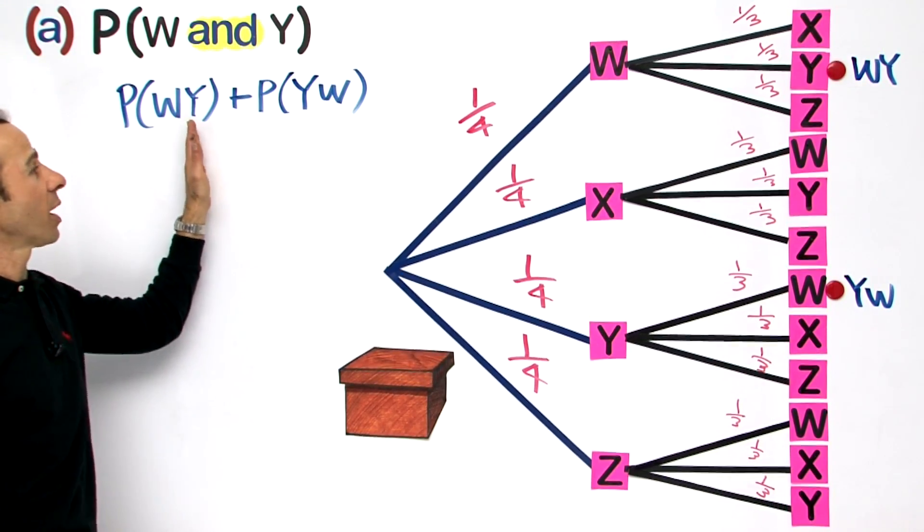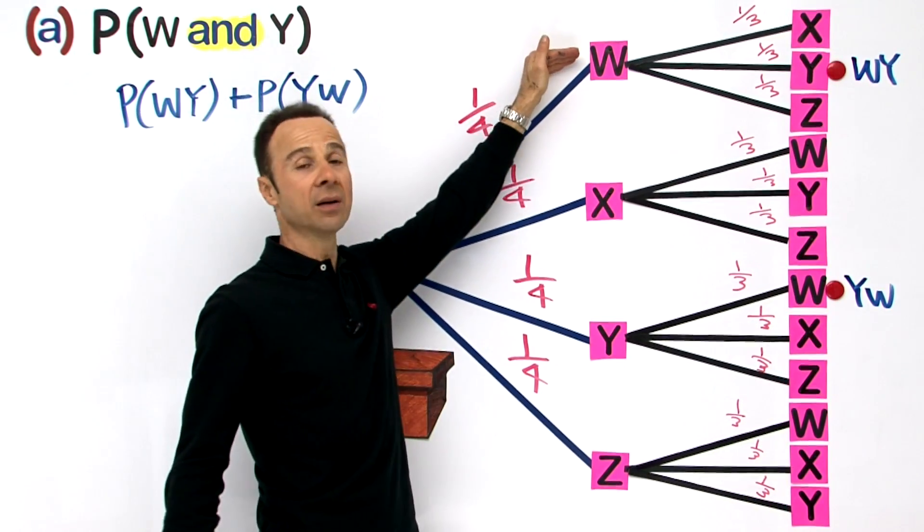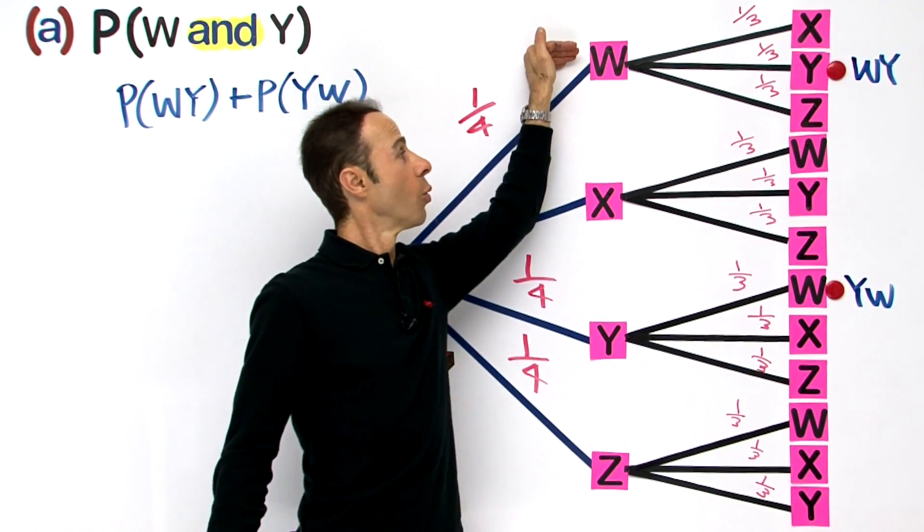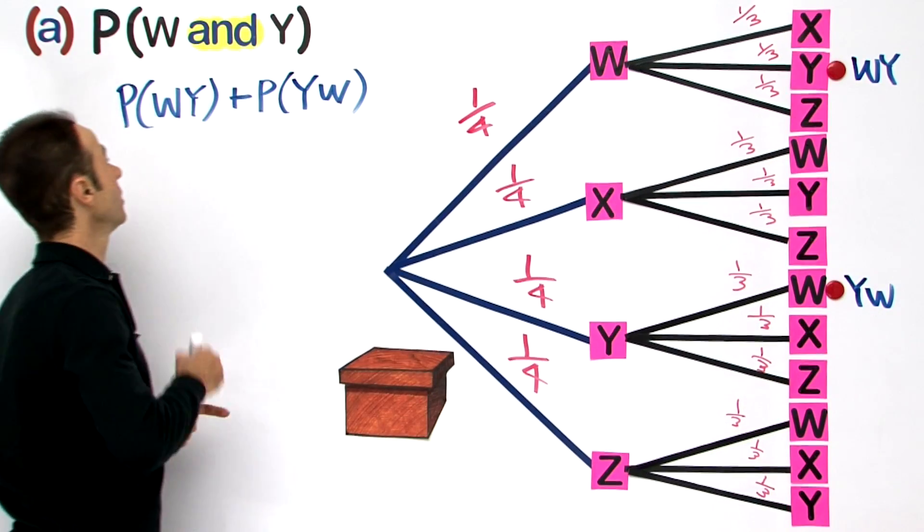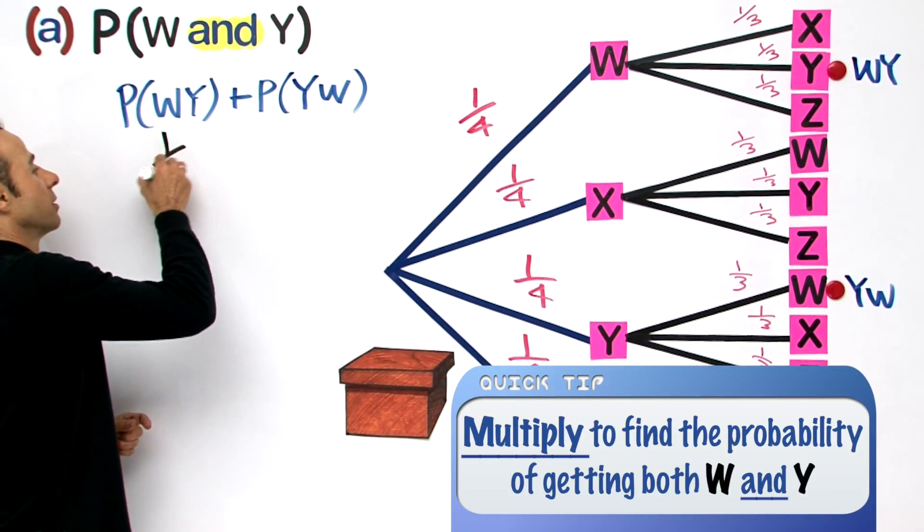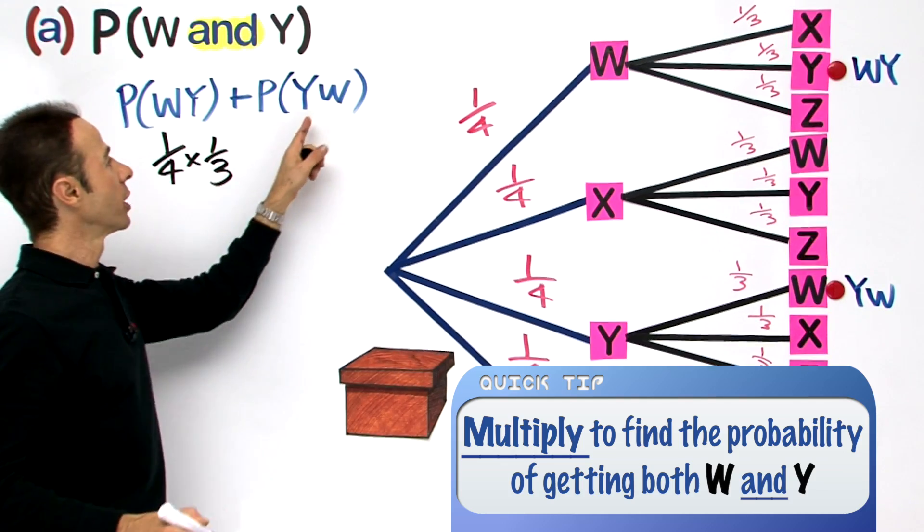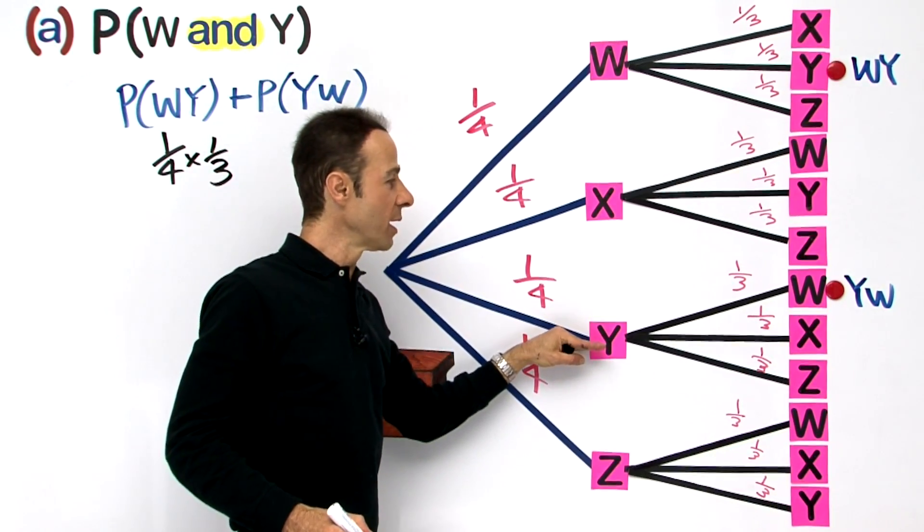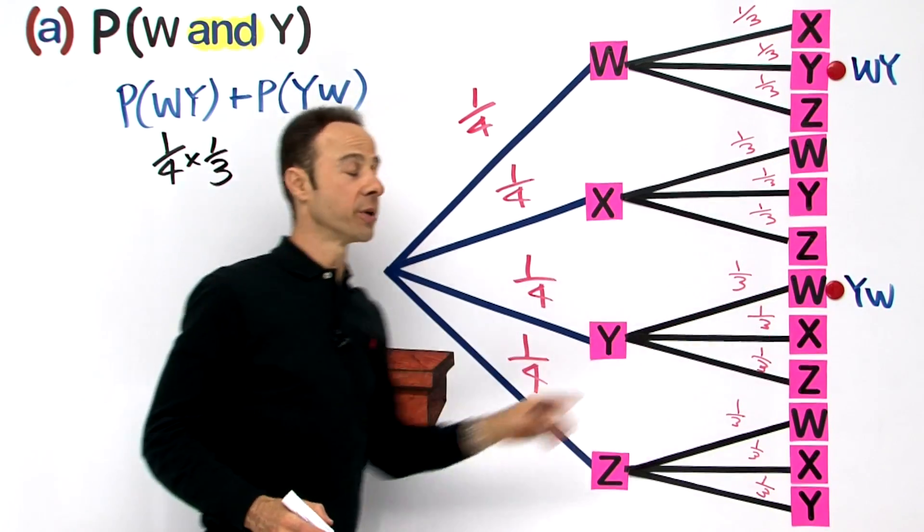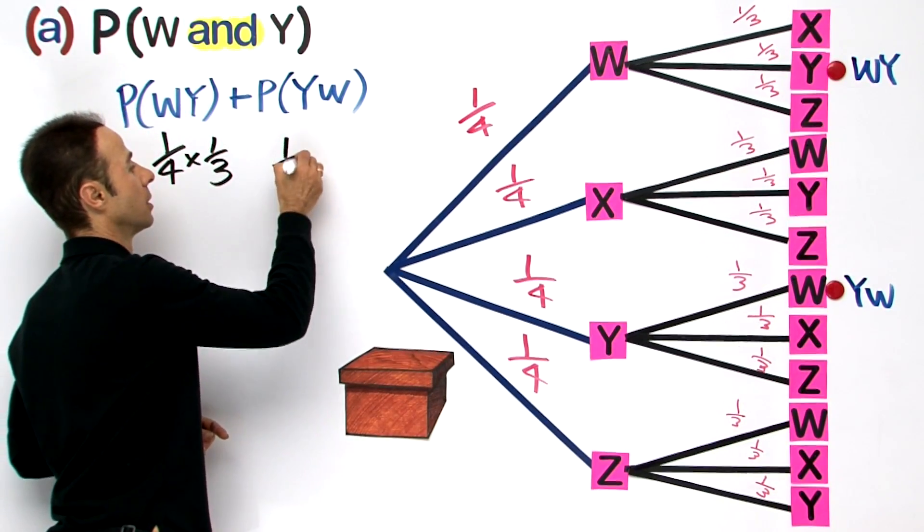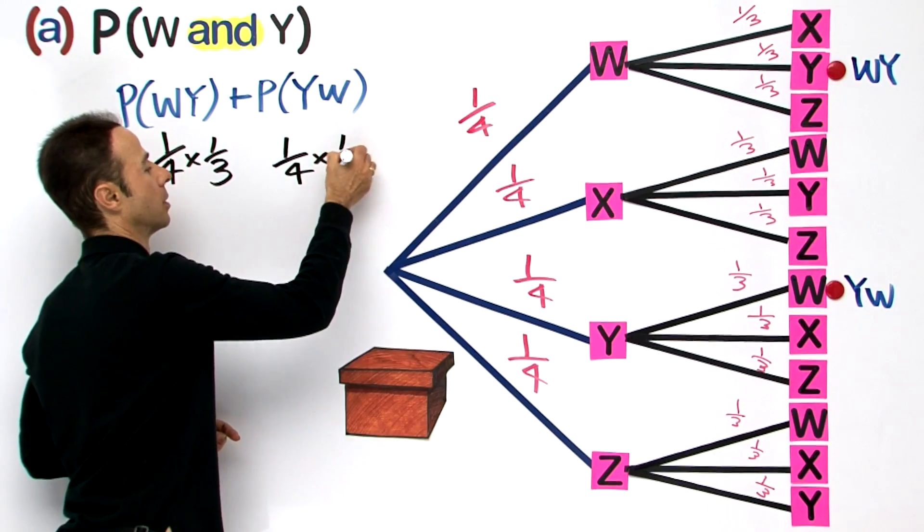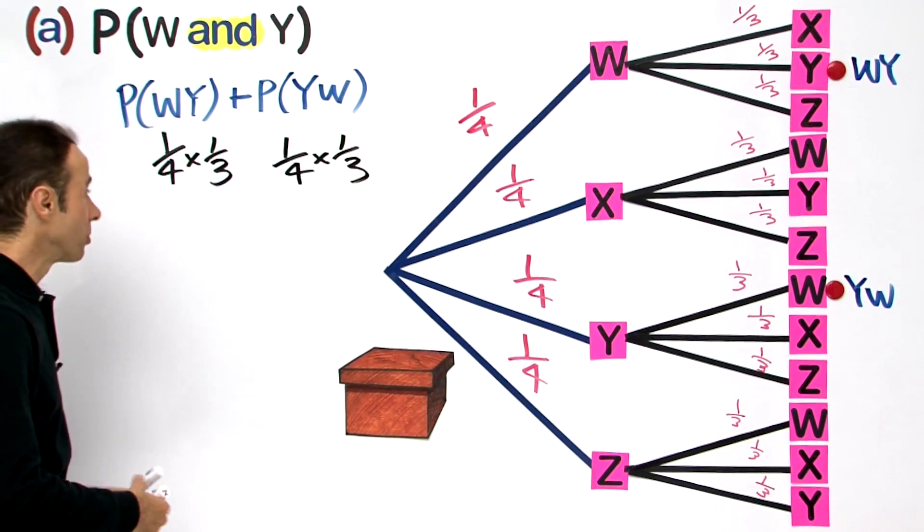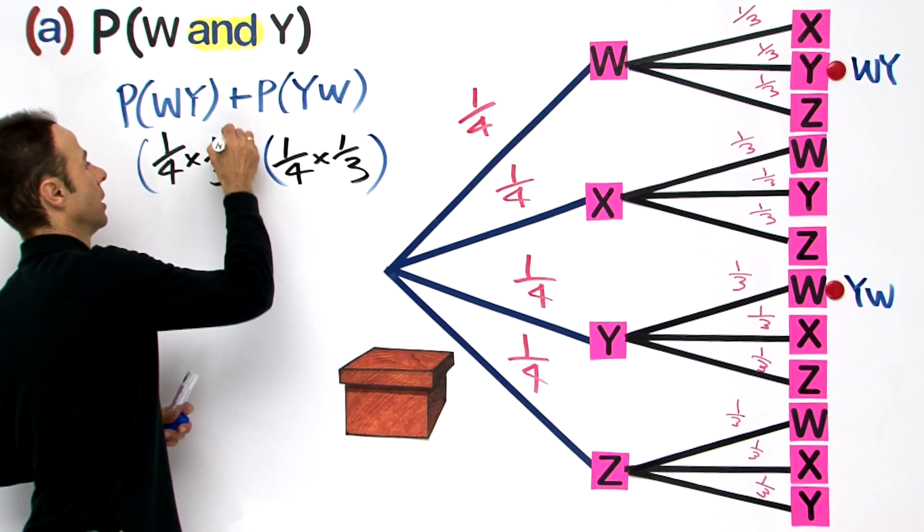Well, we have the first one which is WY—that is going to be 1 quarter multiplying 1 third. Let us write that in: 1 quarter. Or we can have a Y and a W: a Y which is 1 quarter and a W which is 1 third.